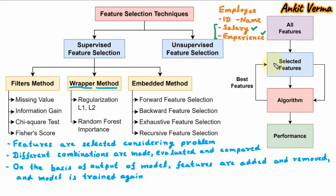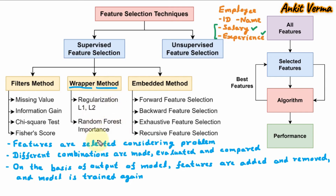If the algorithm is not giving optimum output, we modify the features — we can add or remove some features — and train the model again and check the algorithm. This will keep on going until we get the best performance. In the wrapper method we have techniques such as regularization L1, L2, and random forest importance. That is all about the wrapper method.